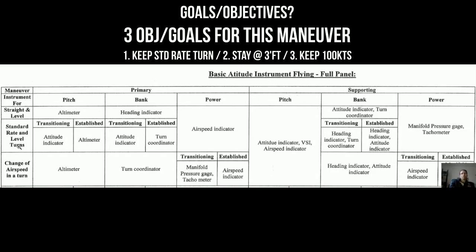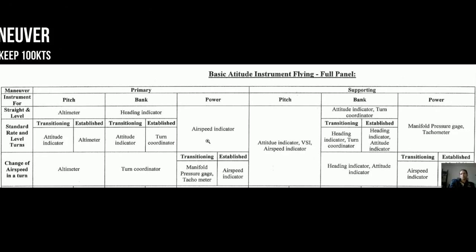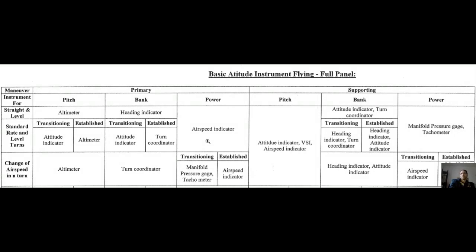Second thing — level turn. We still want to maintain 3,000 feet. Nothing has changed. So where do we look? Primary for pitch — altimeter. It tells us directly whether we are climbing or descending. Primary for power — we still want to maintain 100 knots. Nothing has changed on that part either. So where do we look? ASI. We want to keep that needle on 100.